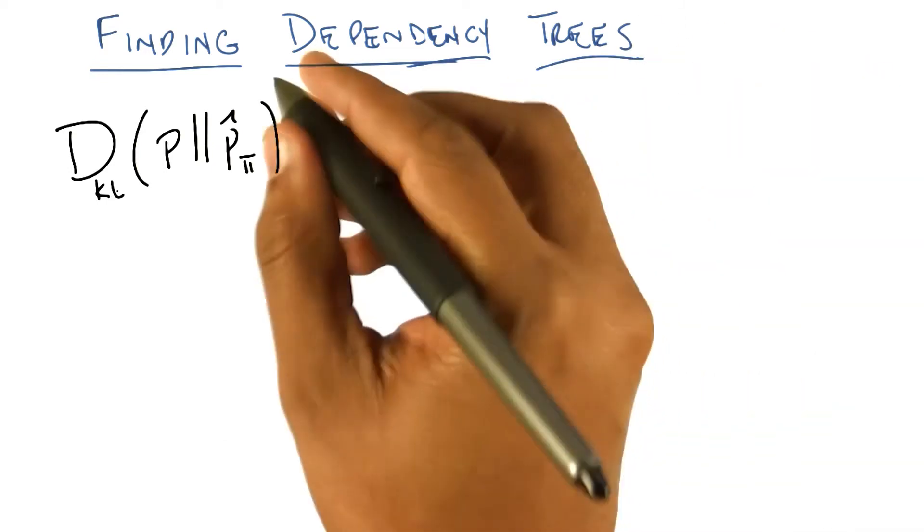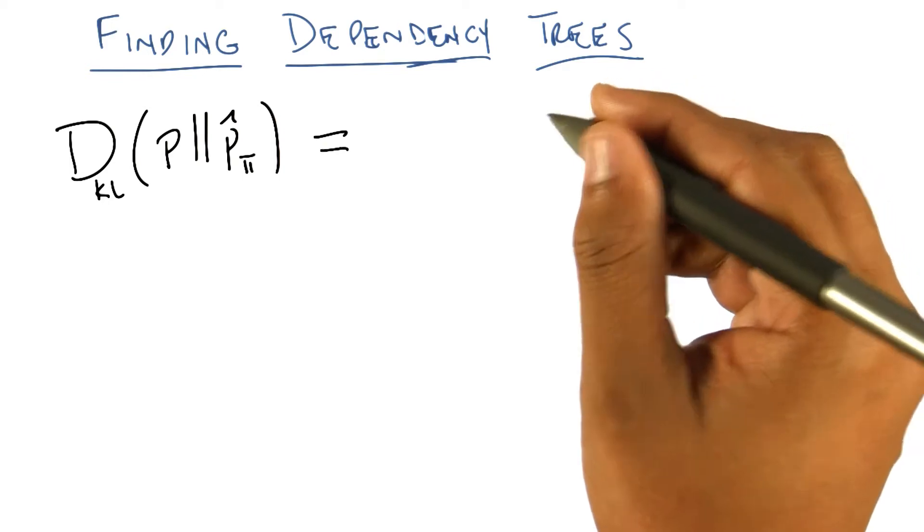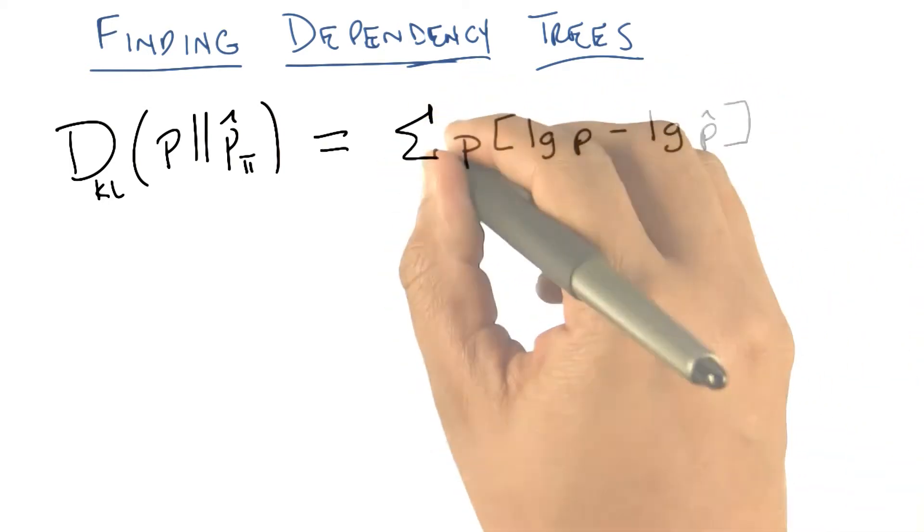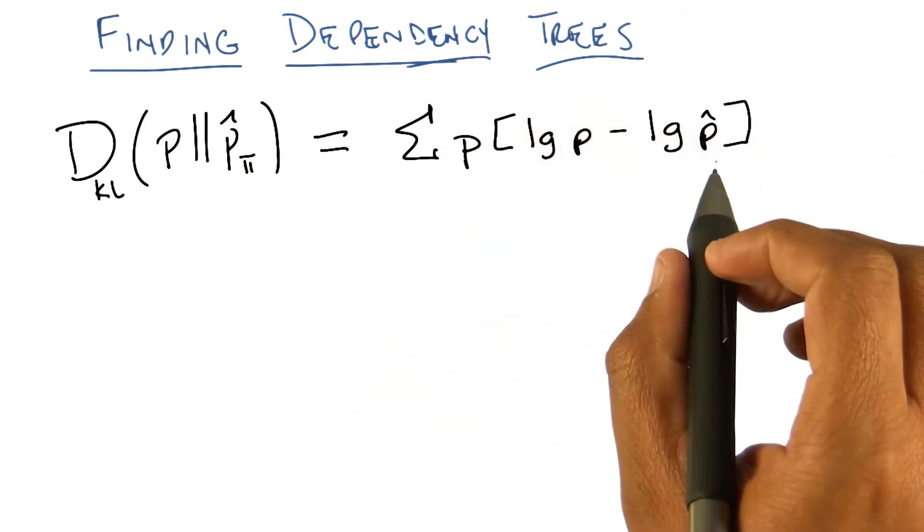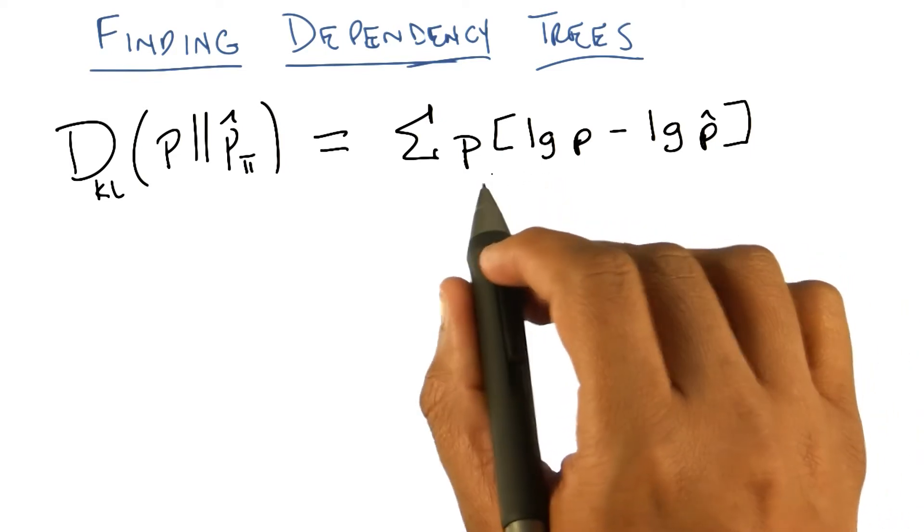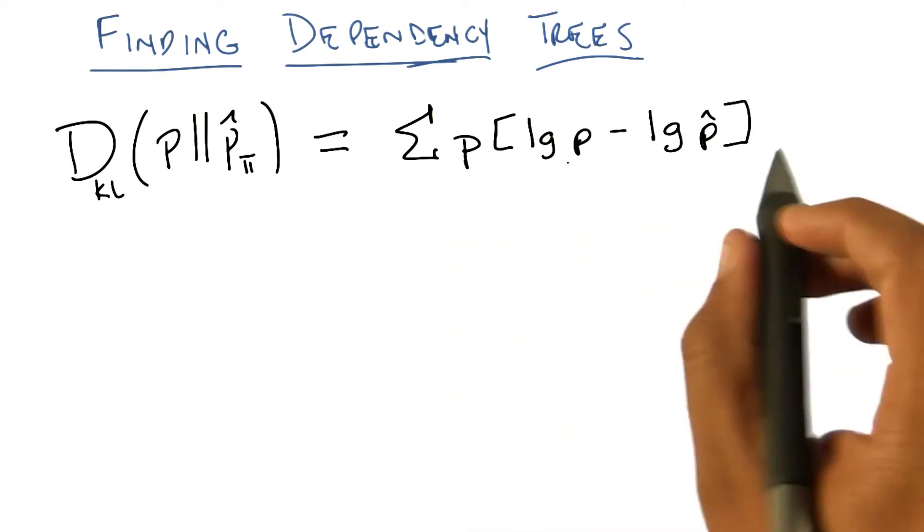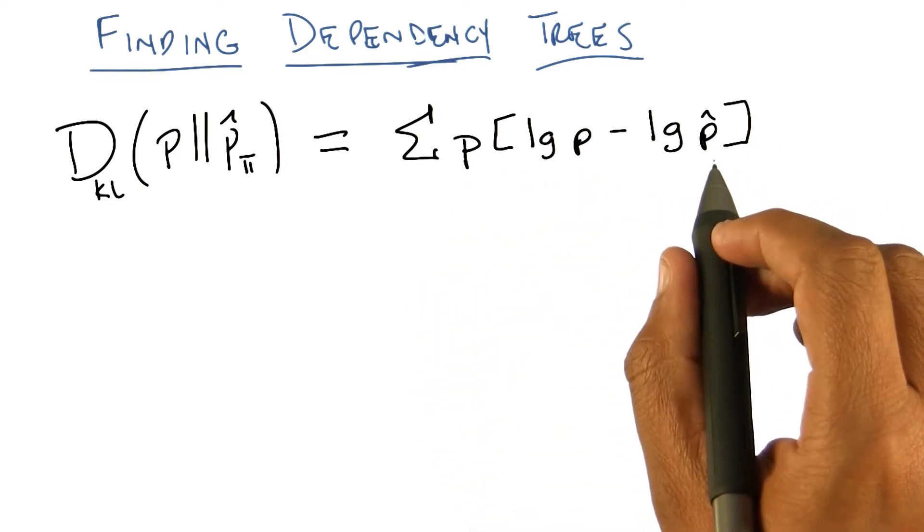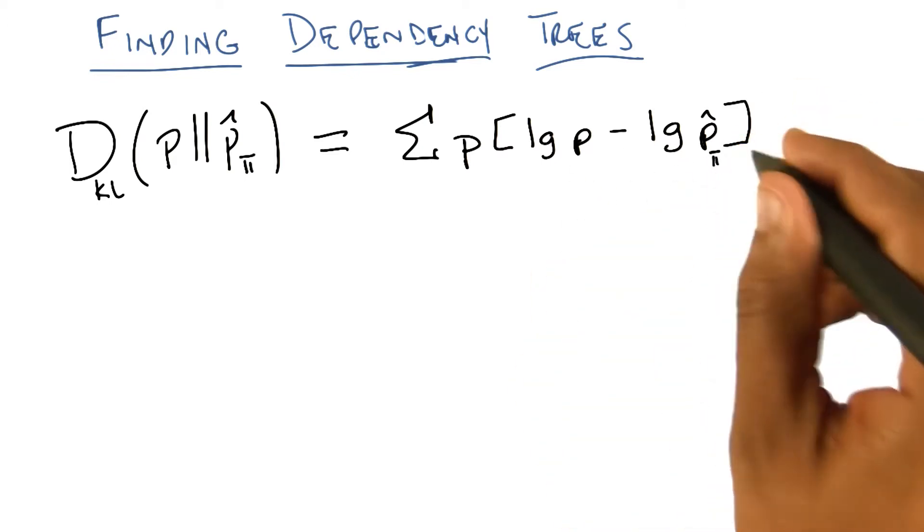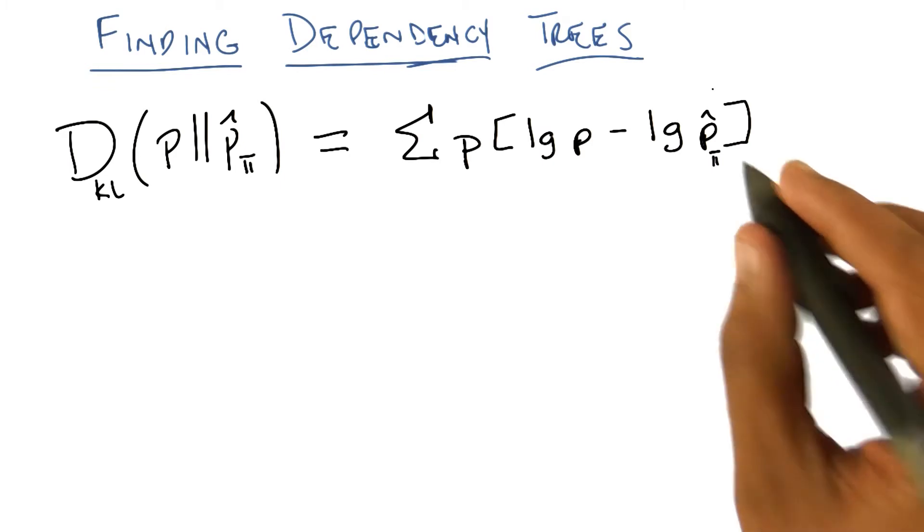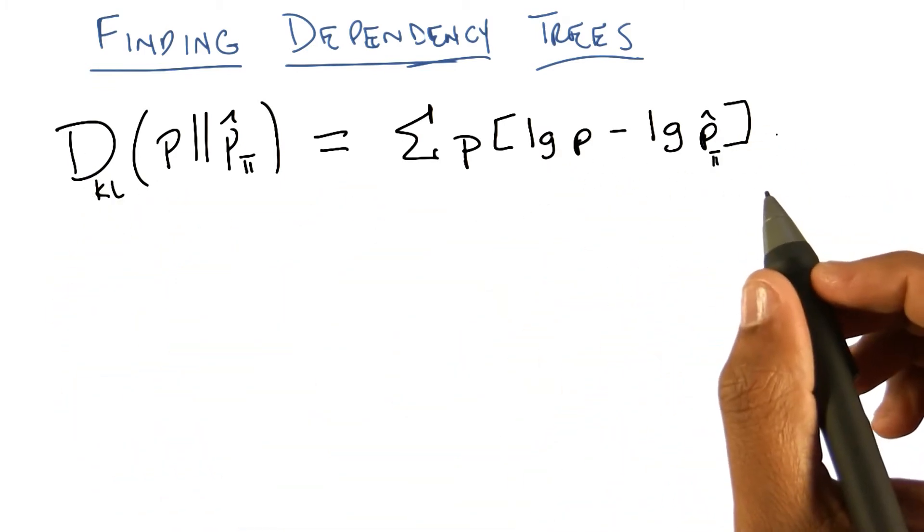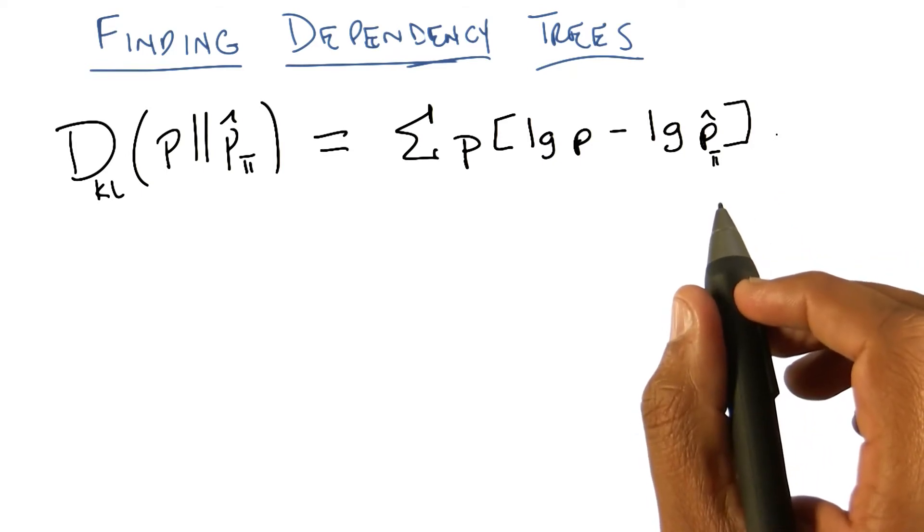And it has a particular form. And in this case, let's assume non-continuous variables. It has basically this form. And that's basically a measure of the divergence, that's what the D stands for, the divergence between the underlying distribution P that we care about and some other candidate distribution, P hat, that we're trying to get as close as possible. So if these are the same distributions, if P hat and P are the same distribution, the Kolbach-Libler divergence is equal to 0.